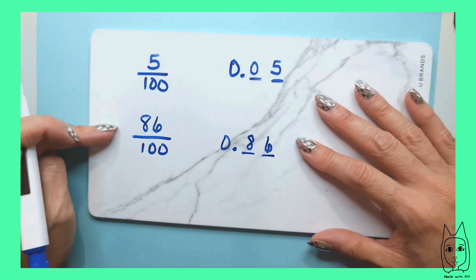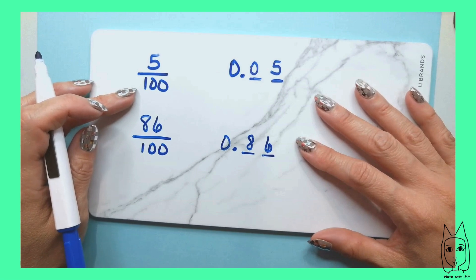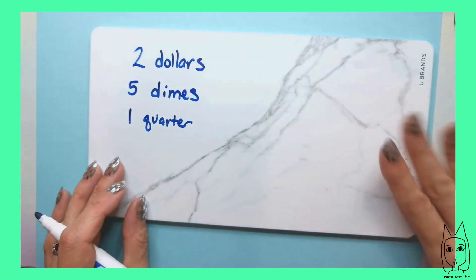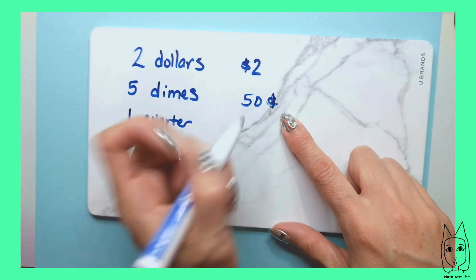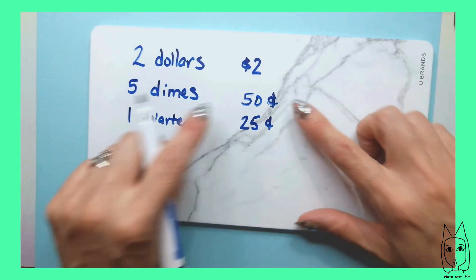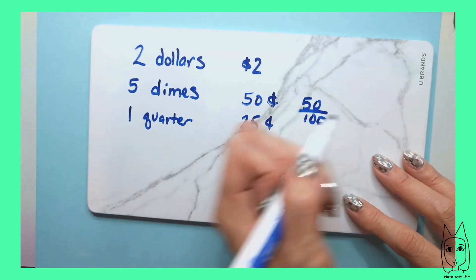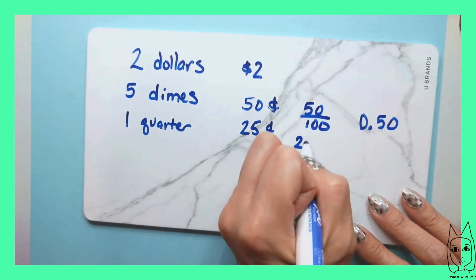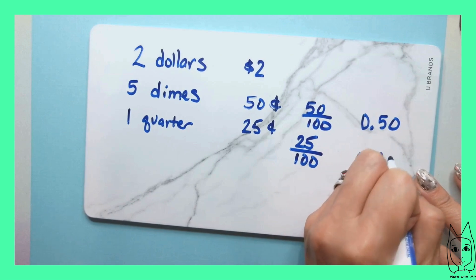This should look familiar — it's what we use when we talk about dollars. A dollar is broken up into one hundred pennies, which is a hundred equal parts, and each penny is worth one cent — one hundredth. You learned about money in third grade. So five dimes would be fifty cents, and a quarter would be twenty-five cents. Fifty cents is fifty out of those one hundred pennies — fifty hundredths. Twenty-five cents is twenty-five hundredths.